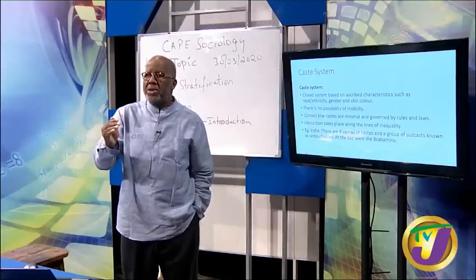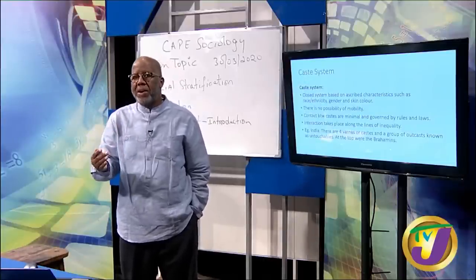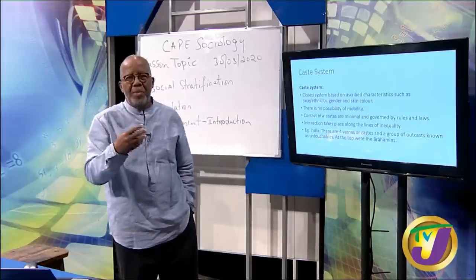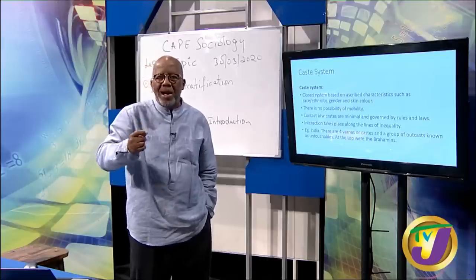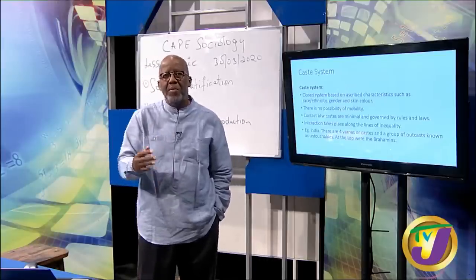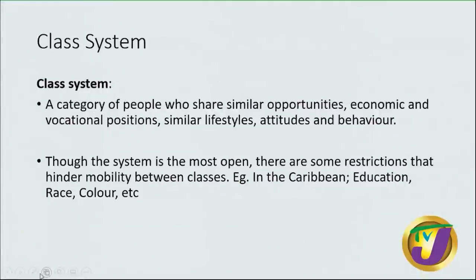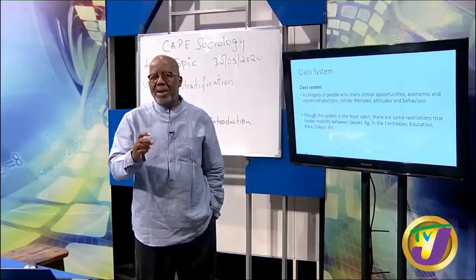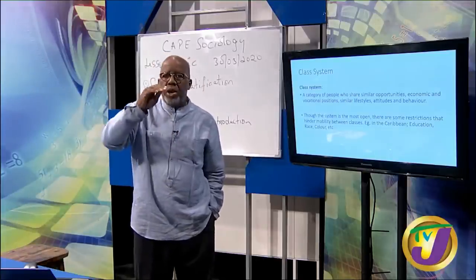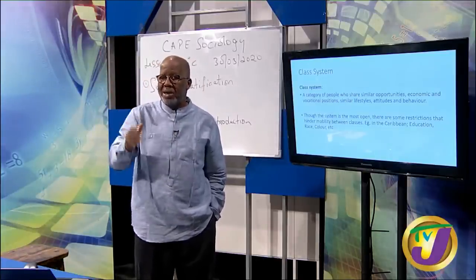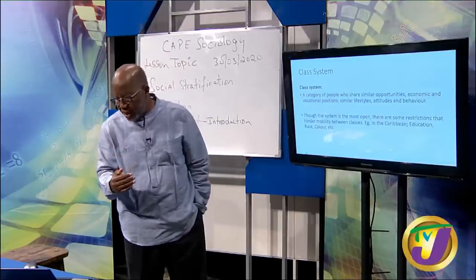The Brahmins were the most religiously pure, followed by the Shastries, then the Sudras. At the bottom were the untouchables, considered out of caste — which is where the term 'outcaste' came from. Then we have the class system, which is what we have in Jamaica. Class tends to be economic. The PRJ puts out each year where the lower, middle, and upper class fall in terms of income, but it has serious social implications. Though the system is most open, there are restrictions on mobility between classes — education, race, colour, and gender.